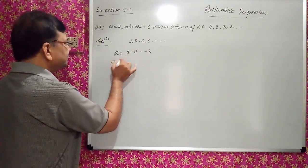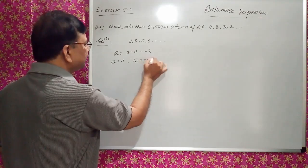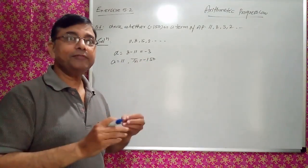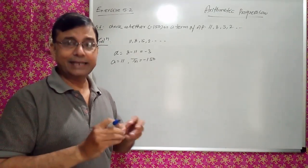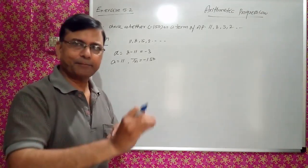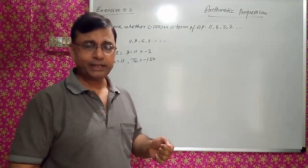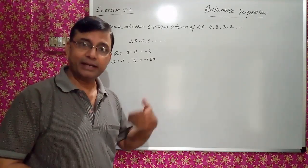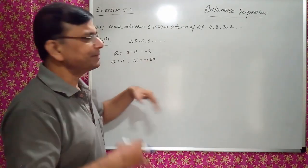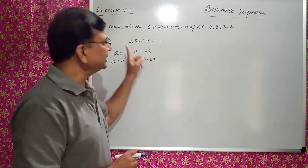TN is assumed to be -150. If we get N as a whole number — a natural number — then only we say this term is in the AP. Because term numbers are 1, 2, 3, 4 and so on; N cannot be a fraction and cannot be negative. Only if N is a whole number can we say it is a term in this AP.